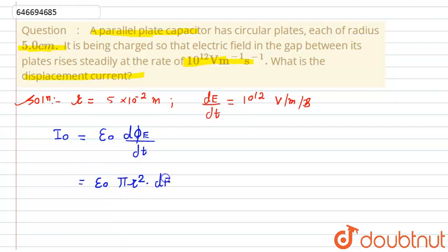This can be written as πr² × dE/dt. This will become equal to ε_0 having the value of 8.85 × 10^-12, π will be as it is, multiply by radius we have 5 × 10^-2 that bracket square, multiply by dE/dt we have 10^12.